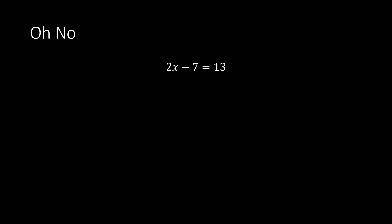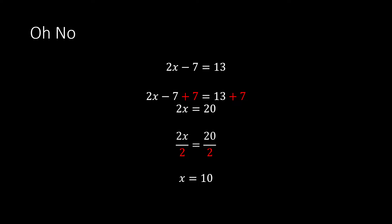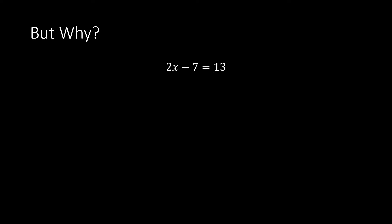Now things get harder: 2x minus 7 equals 13. This time we have two things we don't want — the minus 7 and the multiply by 2. The question is which one do you get rid of first? You get rid of the minus 7 first. To do that, we add 7 to both sides — minus 7 plus 7 cancel out, leaving 2x equals 13 plus 7, which is 20. Then we divide both sides by 2, giving x equals 10.